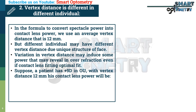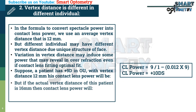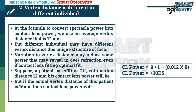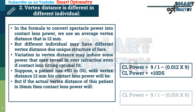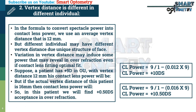Suppose a patient has +9 diopter in both eyes. With a vertex distance of 12 mm, the contact lens power equals 9 divided by (1 minus 0.012 multiplied by 9), giving +10 diopter. But if the actual vertex distance of this patient is 16 mm, then contact lens power equals 9 divided by (1 minus 0.016 multiplied by 9), giving +10.5 diopter. So in this patient, we will find a +0.5 diopter spherical acceptance in over-refraction.